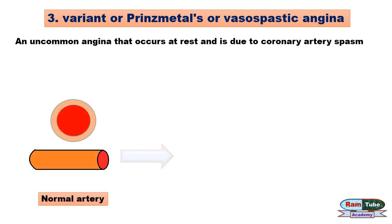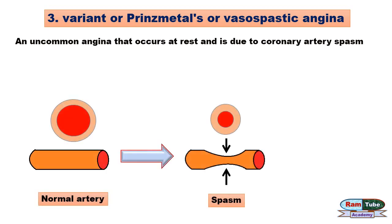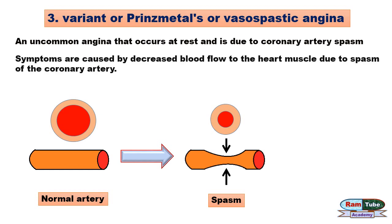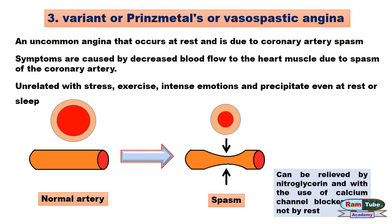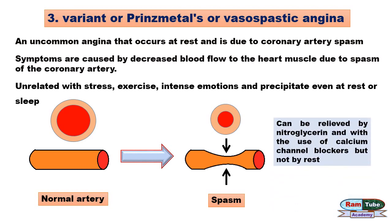The underlying cause of vasospasm or vasoconstriction is unknown. Symptoms are caused by decreased blood flow to the heart muscle due to spasm of the coronary artery. This type of angina is unrelated to stress, exercise, or intense emotions, and can occur even at rest or during sleep.